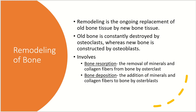Bone remodeling is an important process in bone tissue maintenance and development. Remodeling is the ongoing replacement of old bone tissue with new bone tissue — old bone is constantly destroyed by osteoclasts, and new bone is constructed by osteoblasts. This process involves two things: bone resorption and bone deposition. Bone resorption is the removal of minerals and collagen fibers from bone by osteoclasts, and bone deposition is the addition of minerals and collagen fibers to the bones by osteoblasts.